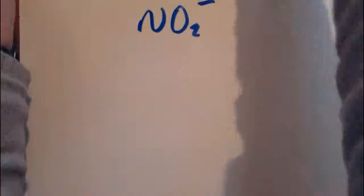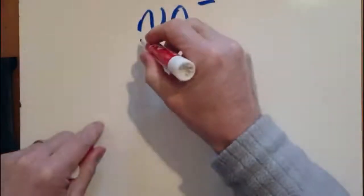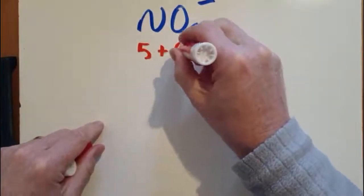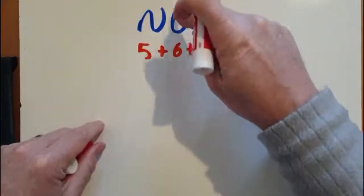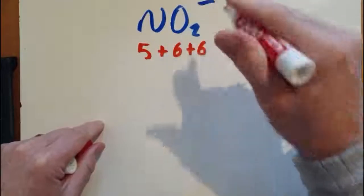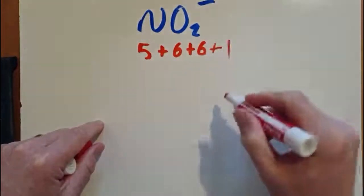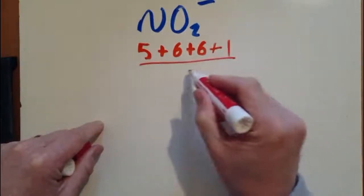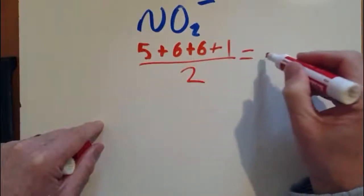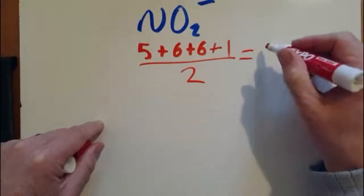So nitrogen has 5 valence electrons, oxygen has 6. Don't forget to double it because there's two oxygens. And there's a cheeky extra electron there, so we need to include that. If I want pairs of electrons, I need to half that, which is going to give me 9.